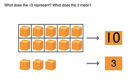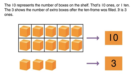What does the ten represent? What does the three mean? The ten represents the number of boxes on the shelf. That's ten ones, or one ten. The three shows the number of extra boxes after the ten frame was filled. It is three ones.